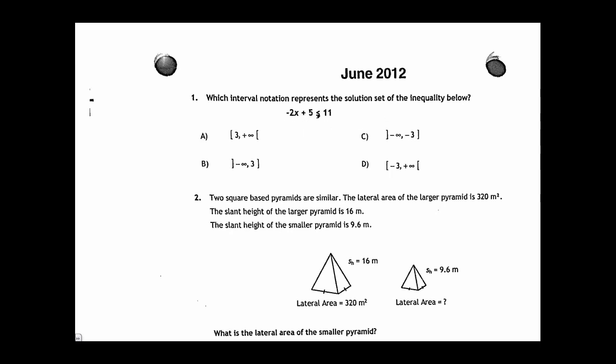Here we have minus 2x plus 5 is less than or equal to 11. We start by subtracting 5 on both sides. This leaves us with minus 2x is less than or equal to 11 minus 5, which is 6.